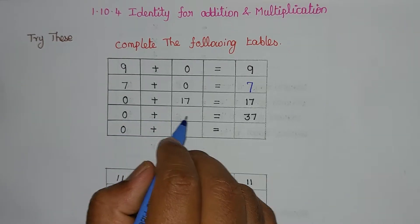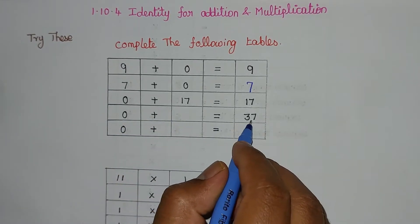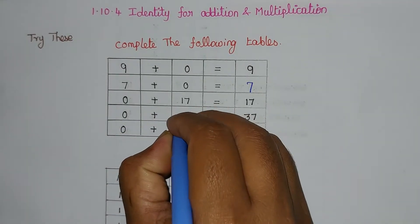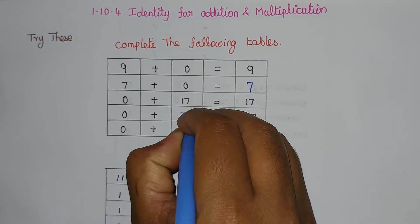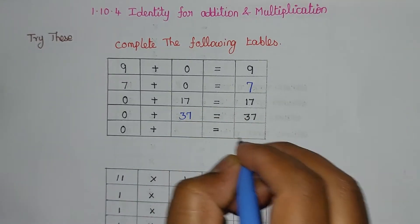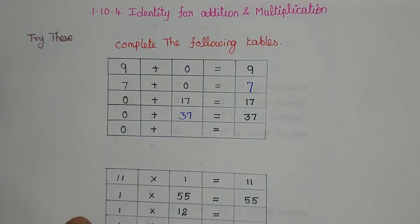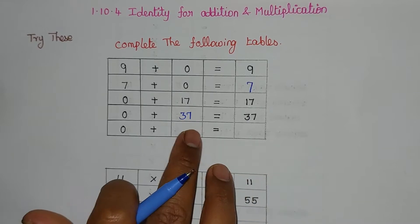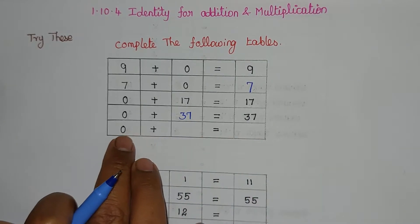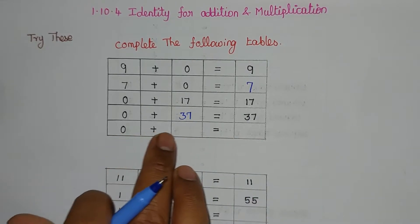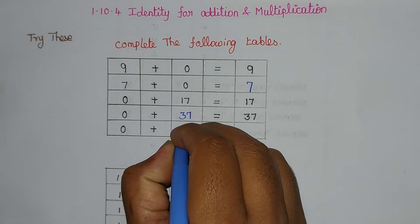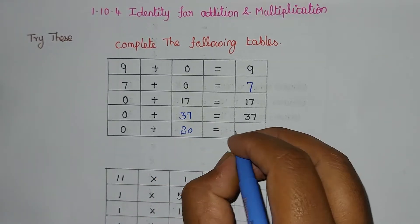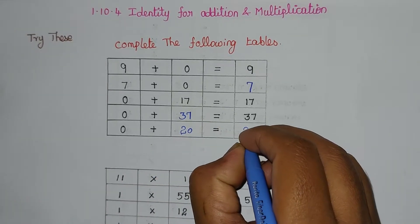0 plus blank equals 37. So 0 plus 37 equals 37 — we fill in 37. And 0 plus 20 equals 20.